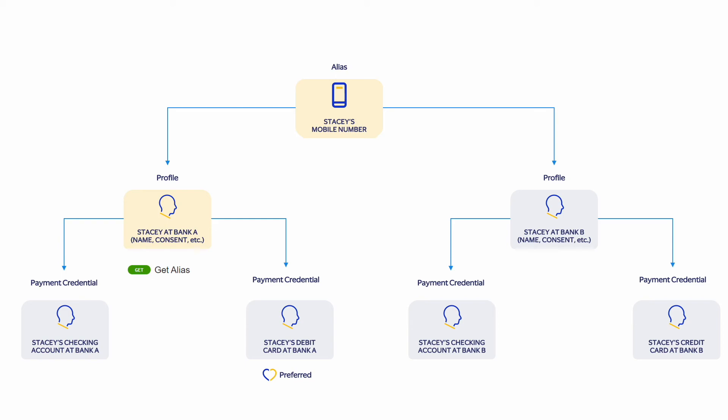Suppose Stacey is using bank A's application and wants to see what payment credentials she has linked to her mobile number, or check which of her payment credentials is currently marked as preferred. In this case, bank A could use the get all payment credentials API to pull up this information within her banking app. This is particularly useful when a consumer wants to view all of the payment credentials linked to their account via the issuer's app. Alternatively, if Stacey wants to retrieve information on just one specific payment credential, bank A can use the get payment credential API.